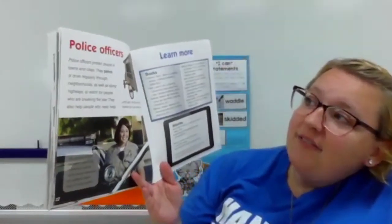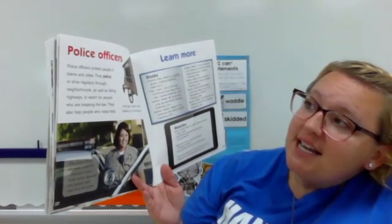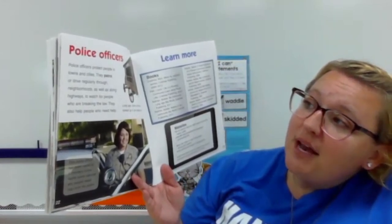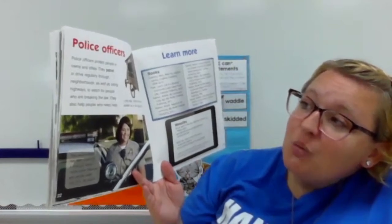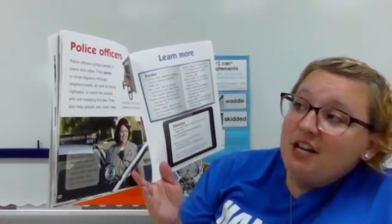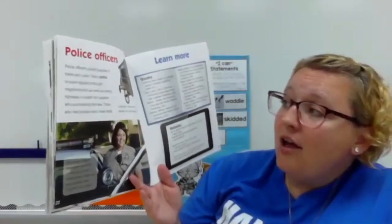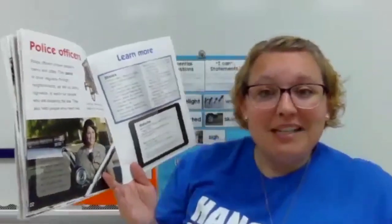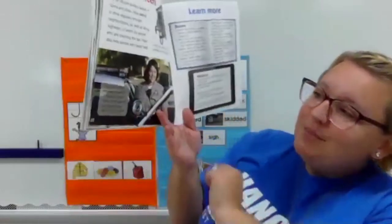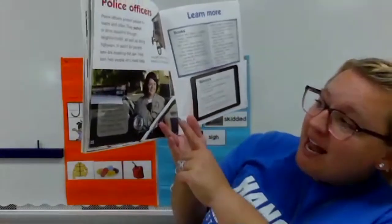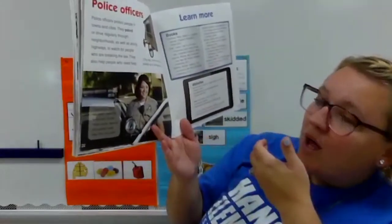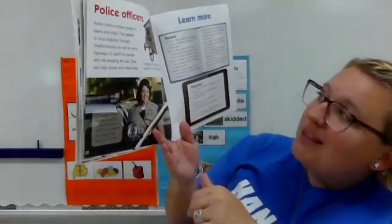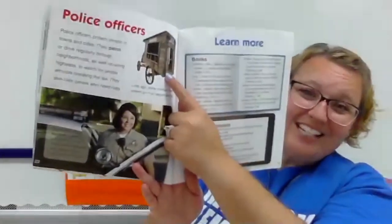Police officers protect people in towns and cities. They patrol neighborhoods and highways to watch for people who are breaking the law. They also help people who need help. Long ago, some criminals were locked up in jail wagons. So it sounds like we've had police officers for a really long time, but they just look a little different now — this police officer has a badge, a dispatch walkie-talkie, and a car with lights, compared to what they had to drive around long ago.